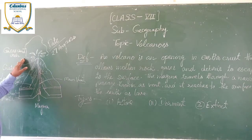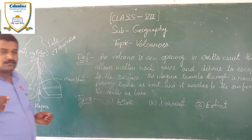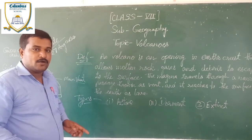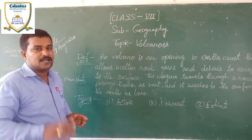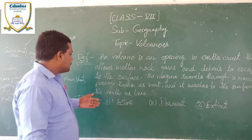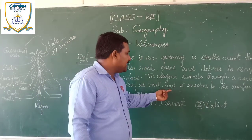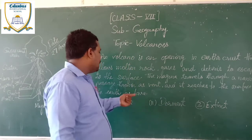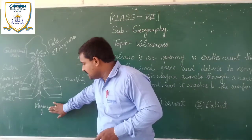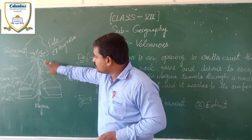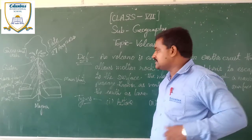Please see the diagram in your book as well. Watch the video and see the book at the same time — you will properly understand what I am saying. The magma travels through a narrow passage and reaches the surface as lava. In the start, when it is underground, it is known as magma, and when it goes up it is changed into lava. Both are the same thing.